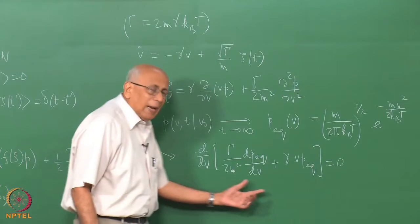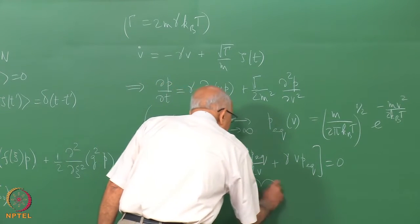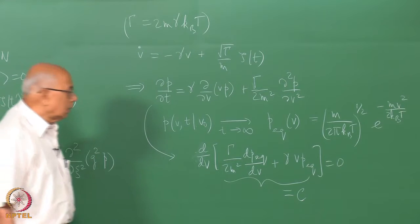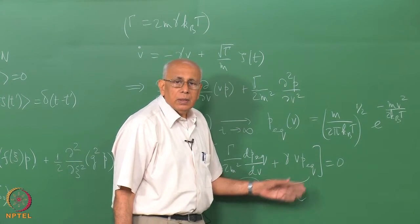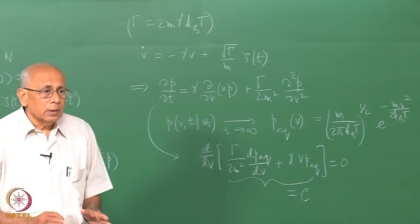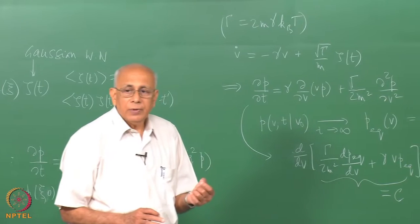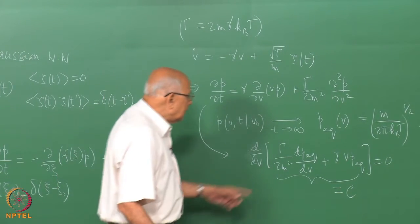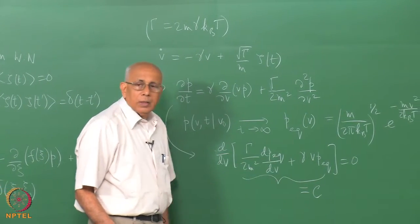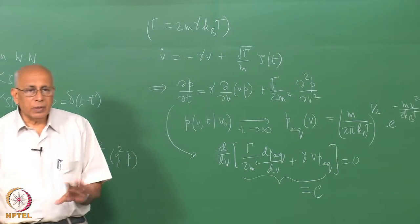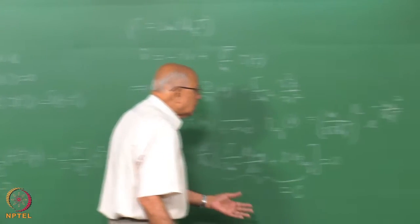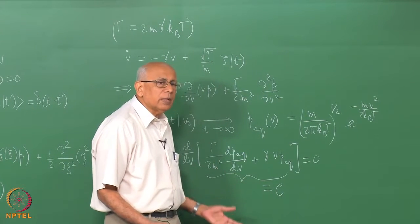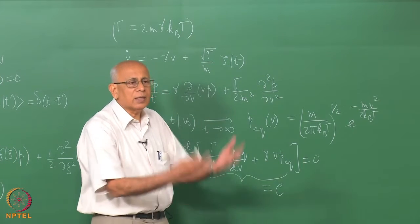Setting the time derivative to zero implies the bracket — that is, gamma over 2m² times dp_eq over dv plus gamma v times p_eq — equals a constant. But we also require an equilibrium distribution which is normalizable: p_eq must vanish as v goes to plus or minus infinity, and all its derivatives must vanish there too. This implies the constant must be zero, since the bracket equals a constant and vanishes at infinity, so it is zero for all v.